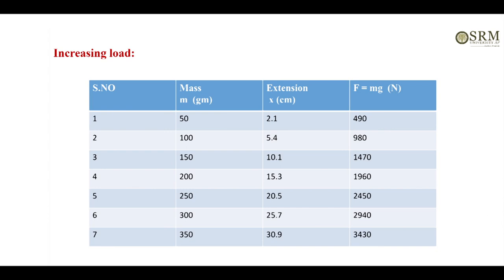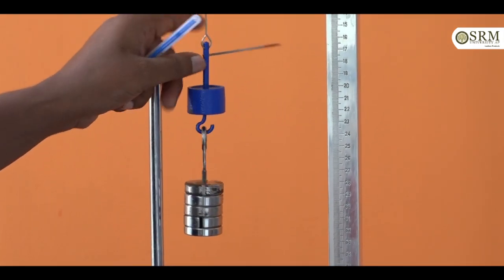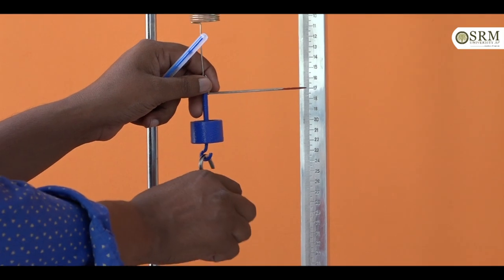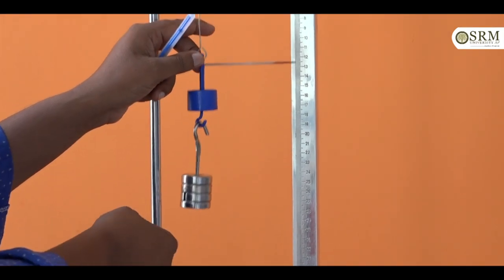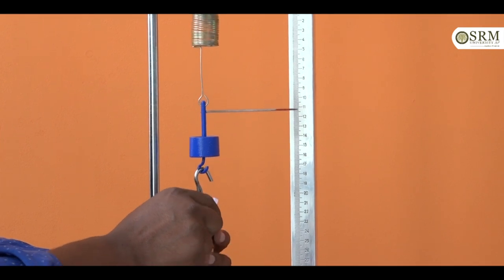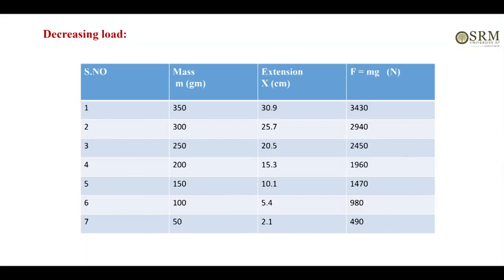This is increasing mass corresponding extension. Later we will decrease 50 grams of mass corresponding extension. Again another 50. In this way we will decrease each 50 grams of mass.